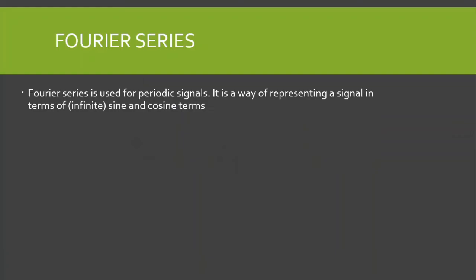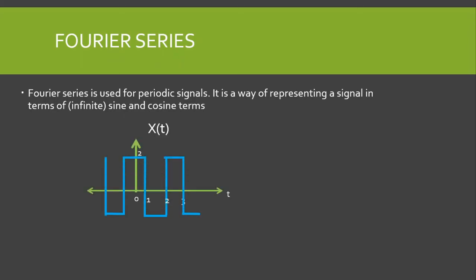The Fourier series is used for periodic signals. It is a way of representing a signal in terms of infinite sine and cosine terms. For example, this square wave — according to Fourier, this square wave is composed of an infinite number of sine terms, so if we sum up all those sine terms we are going to get this square wave.